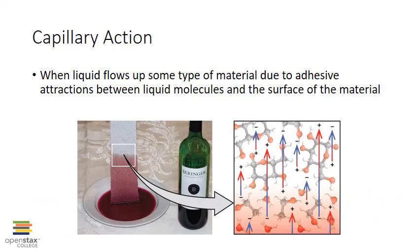Adhesive interactions are also responsible for the phenomenon of capillary action — when liquid flows up some type of material due to adhesive attractions between the liquid molecules and the surface of the material. One example is the way that liquid can wick up paper, like wine rising up a paper towel. The cellulose fibers in the paper contain many OH groups, which attract both water and ethanol molecules in the wine. These attractions draw the liquid up the fibers, and cohesive forces among the water molecules also help draw up more liquid as it continues to rise.